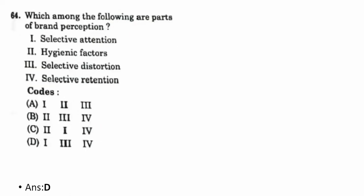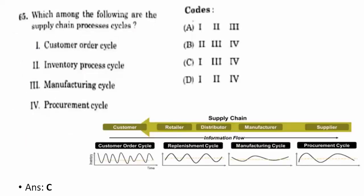Sixty-fourth question: which are the parts of brand perception? The correct option is D — selective attention, selective distortion, and selective retention. Sixty-fifth question: which are the supply chain process cycles? Looking at the diagram, the correct option is C — one, three, four: customer order cycle, manufacturing cycle, and procurement cycle.